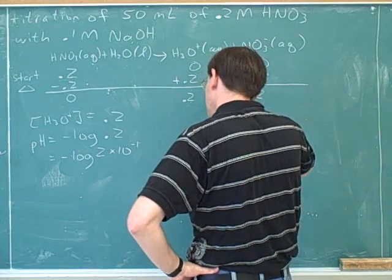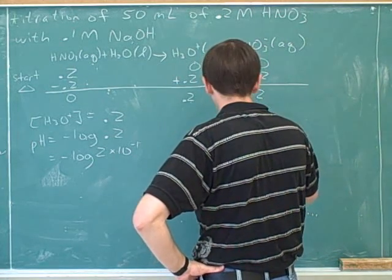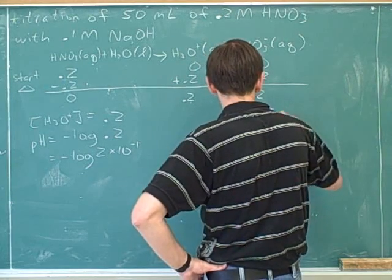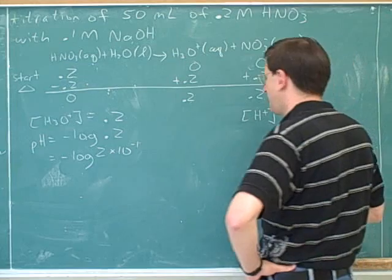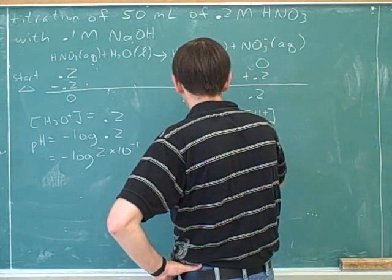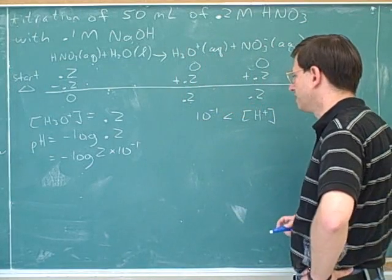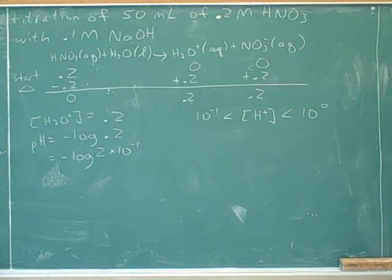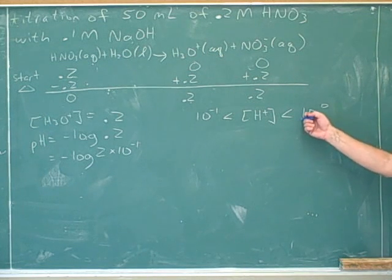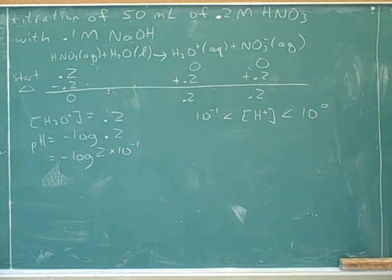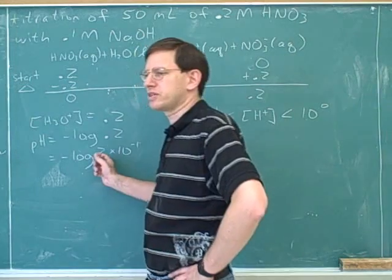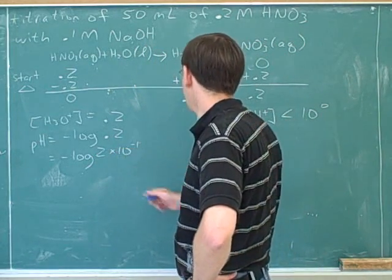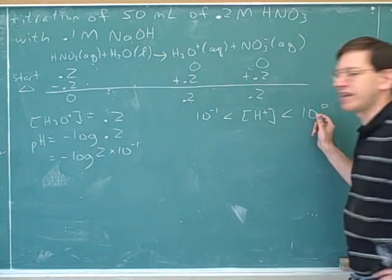So I would work that out like this. I would say that the hydronium concentration then is greater than 10 to the negative 1 and smaller than 10 to the 0. Does that make sense? The 2 is confusing to us here. But we know that this is bigger than 1 times 10 to the negative 1. But it's smaller than 10 to the 0.